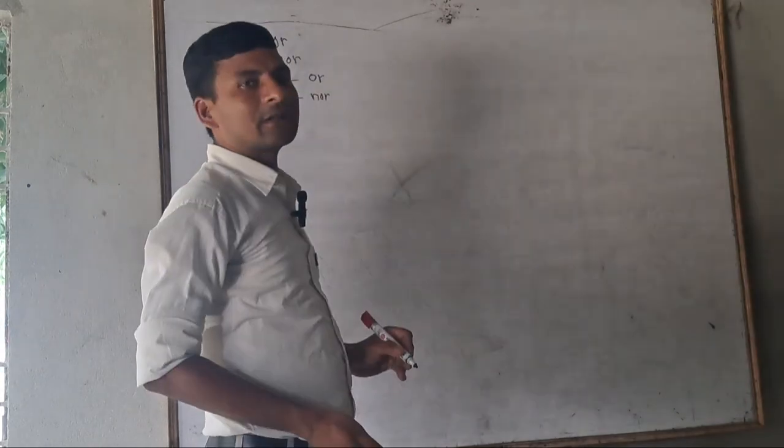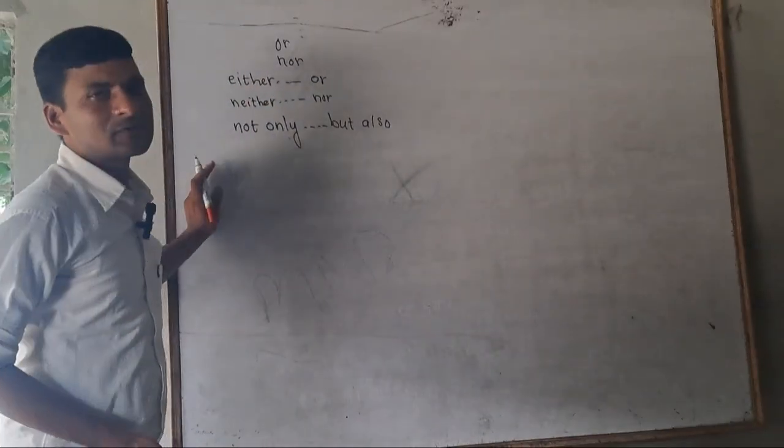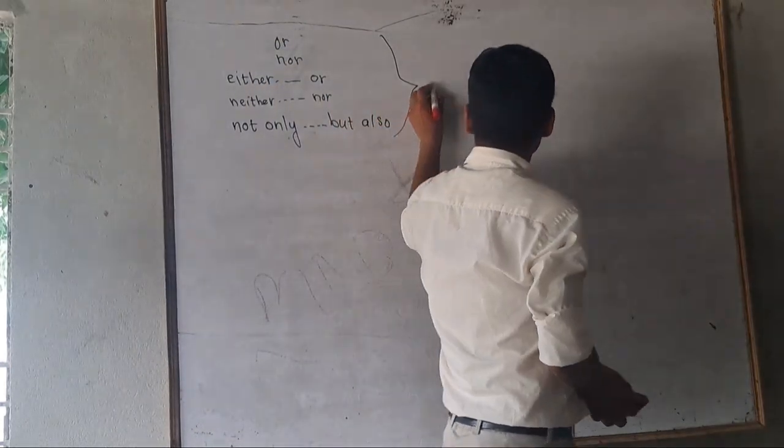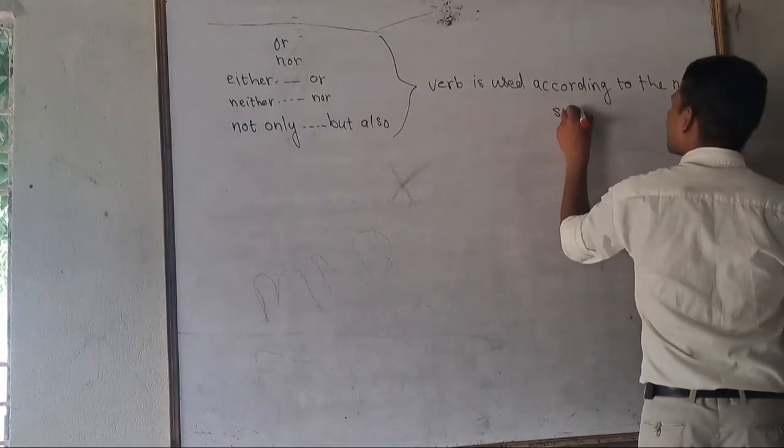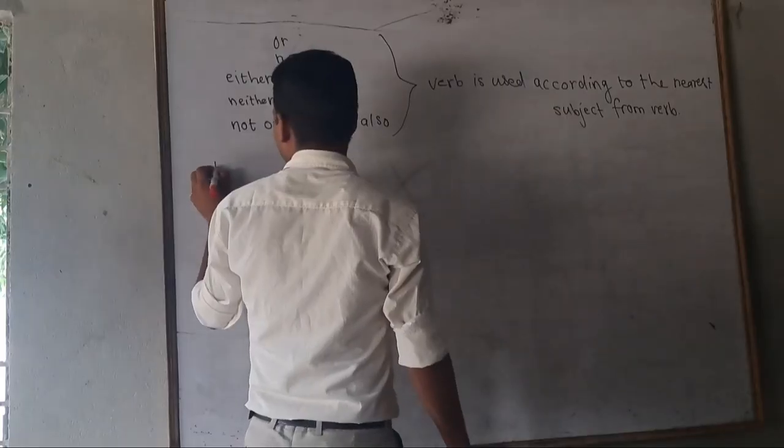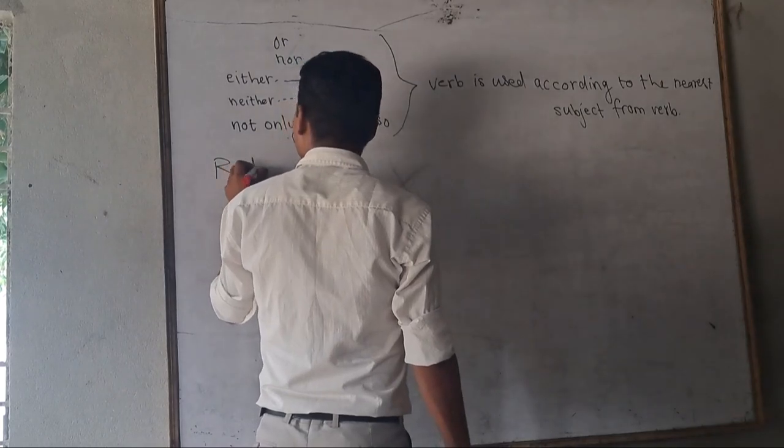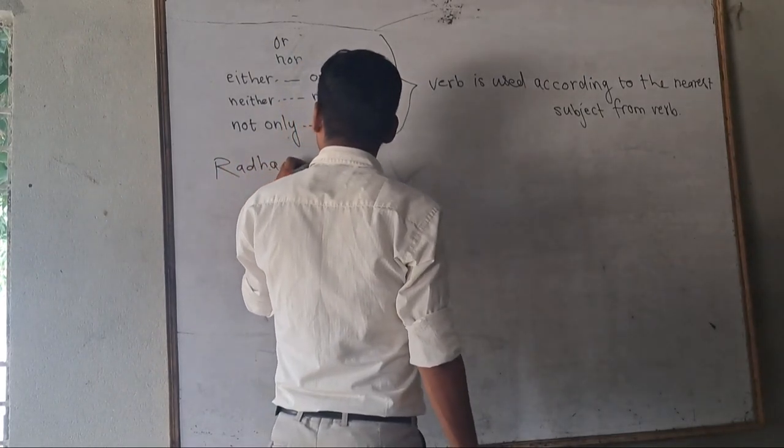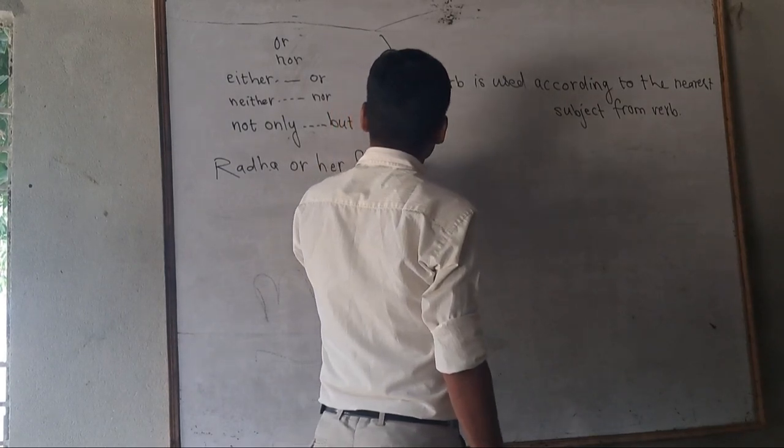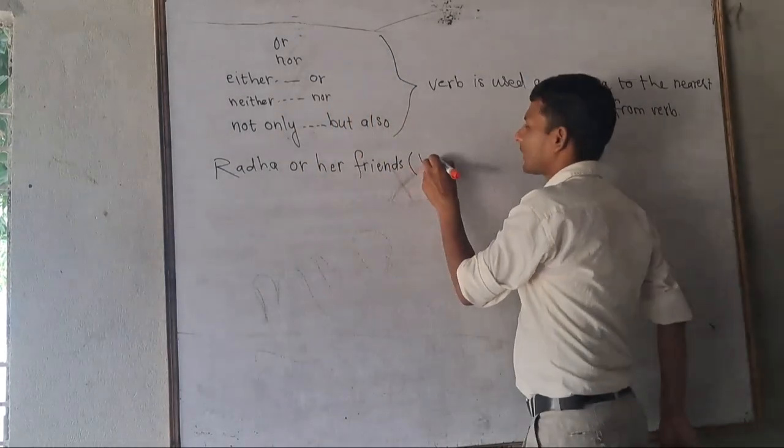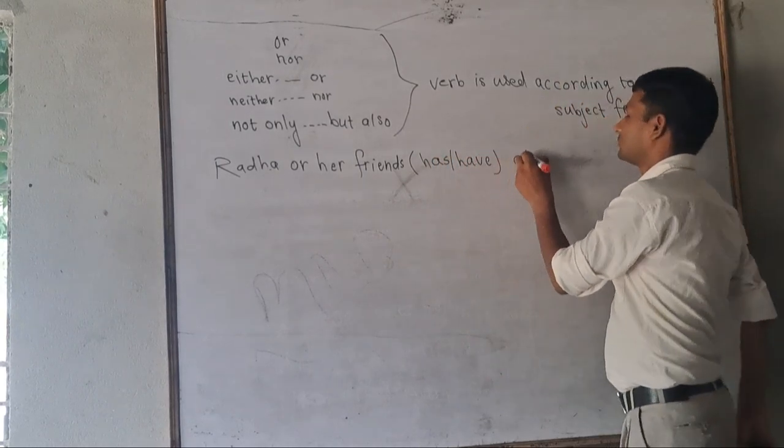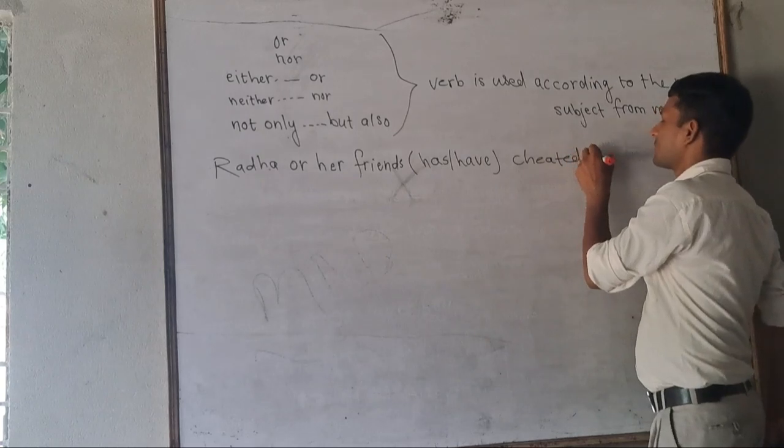Either, or. Other verb, other verb, nor. Sentence is joined with this, then verb is used from verb, nearer subject from verb. Radha or her friends has or have.